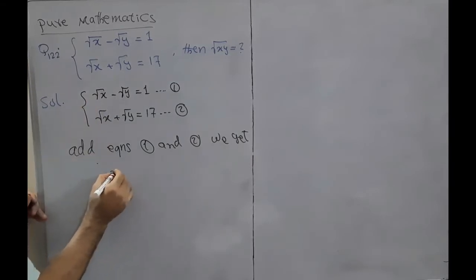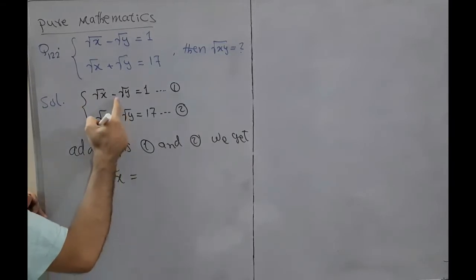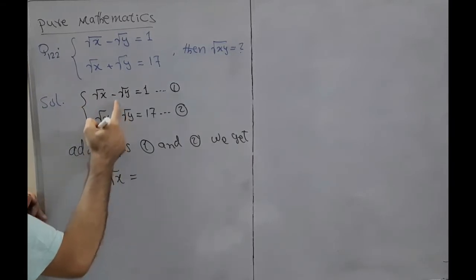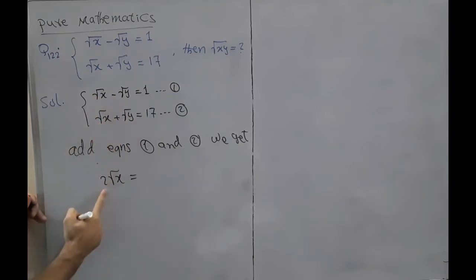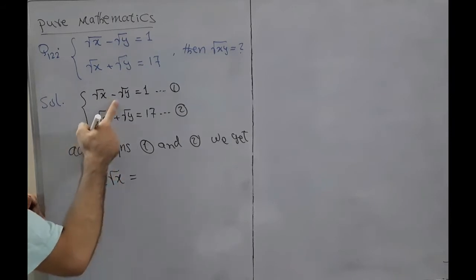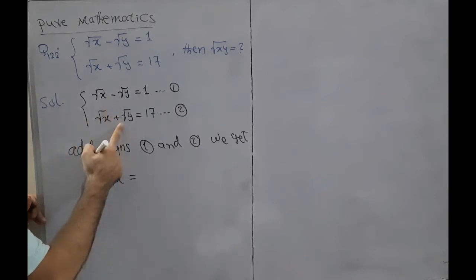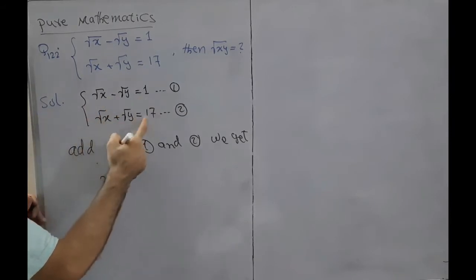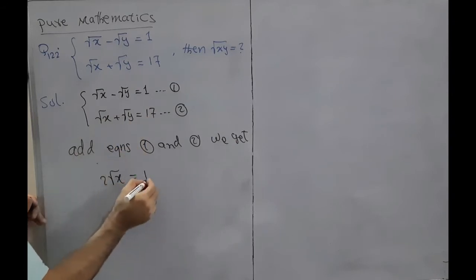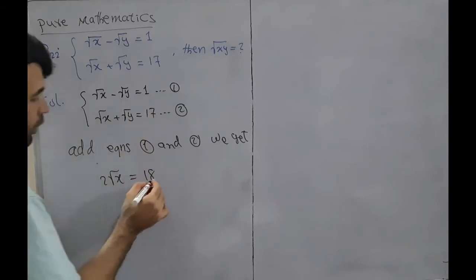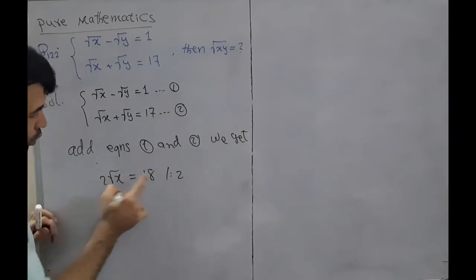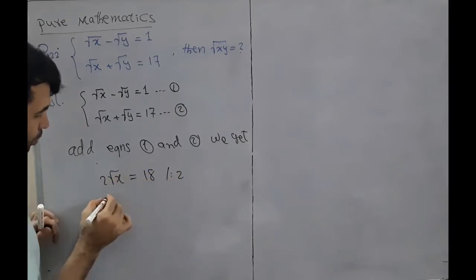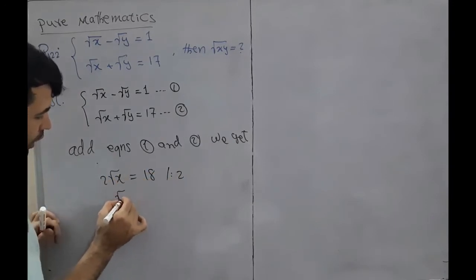When we add, we get 2 times square root of x on the left side — the square root of x plus square root of x gives 2√x — and the square root of y terms cancel out. On the right side, 1 plus 17 equals 18. Now we divide both sides by 2.